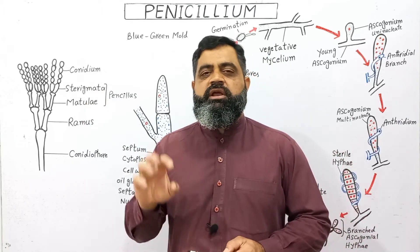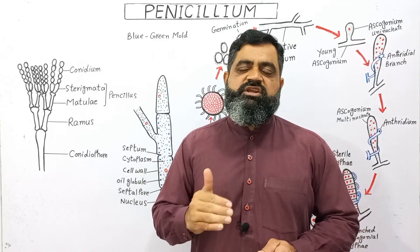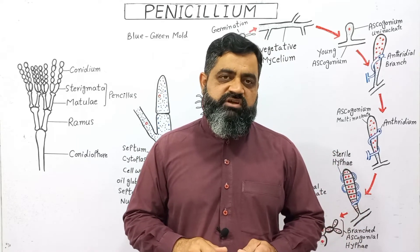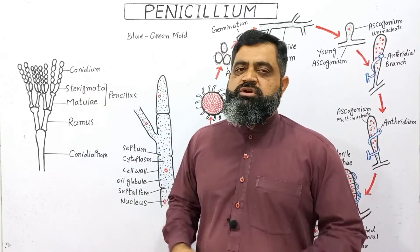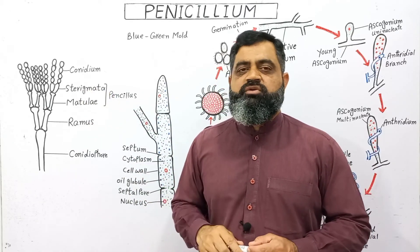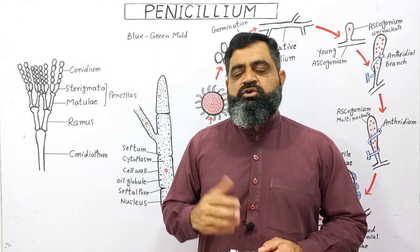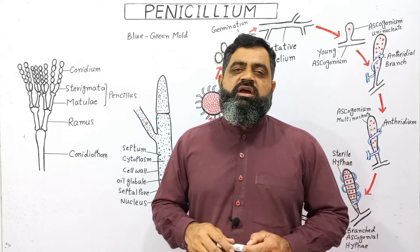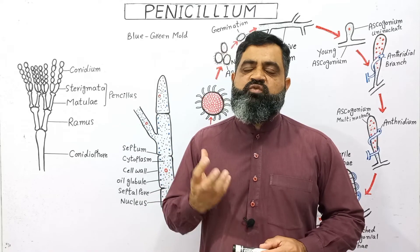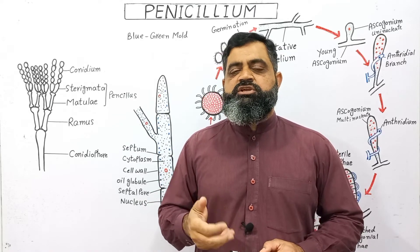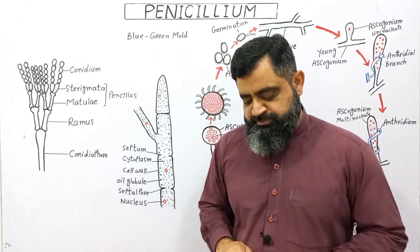On the surface of the sterigmata and metuli, a large number of spores called conidia are produced, which are brush-like in appearance. The arrangement and number of conidia depends on the species of Penicillium. When conidia become mature, they break off from the hyphae and are dispersed by wind, water, or other agents. They survive unfavorable conditions, and when favorable conditions return, these conidia germinate to produce a new vegetative structure.